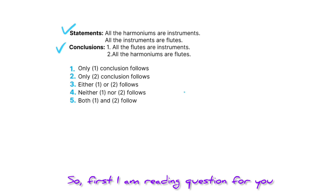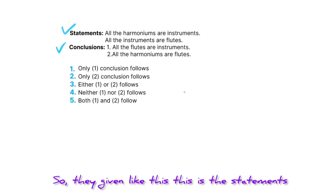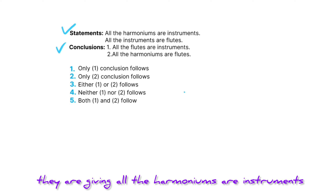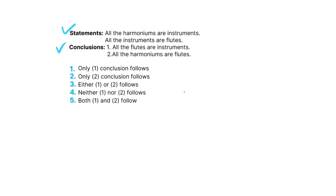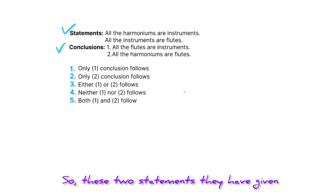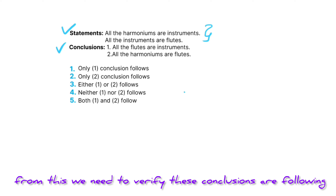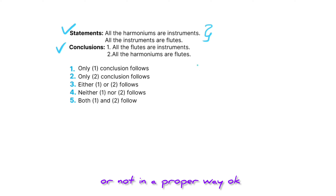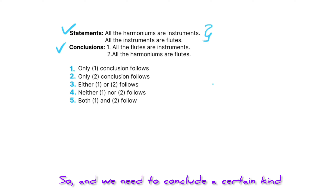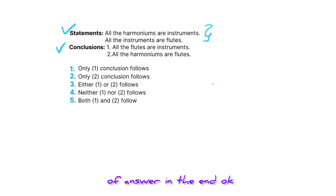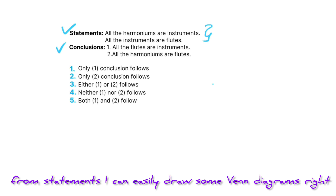So first I'm reading the question for you. The statements given are: all the harmoniums are instruments, and all the instruments are flutes. From these two statements, we need to verify whether the conclusions are following or not. We need to conclude a certain kind of answer in the end. From the statements, I can easily draw some Venn diagrams.